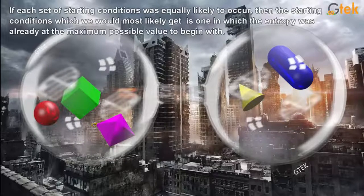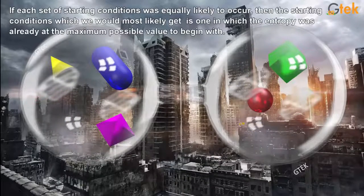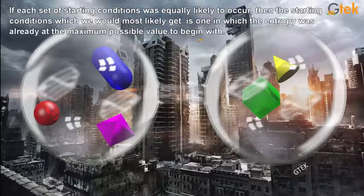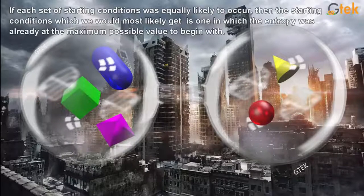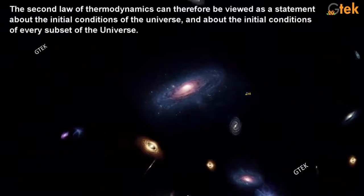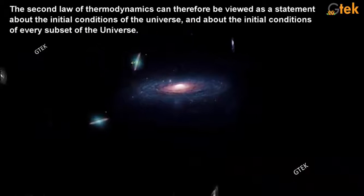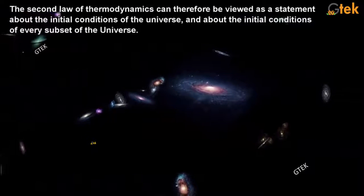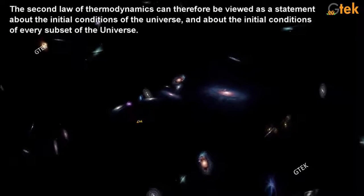If each set of starting conditions was equally likely to occur, then the starting condition which would most likely get is one in which entropy was already at the maximum possible value to begin with. A different combination of three-to-two. The second law of thermodynamics can therefore be viewed as a statement about the initial condition of the universe and about the initial condition of every subset of the universe.